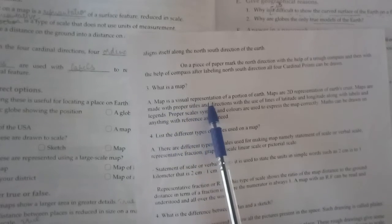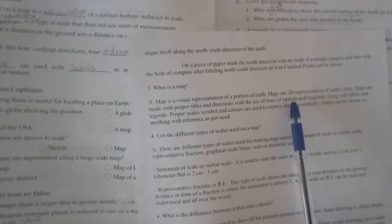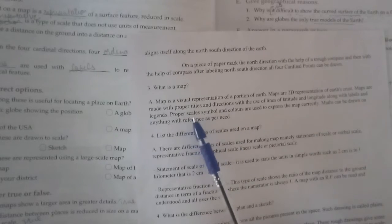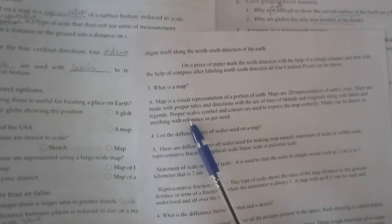What is a map? A map is a visual representation of a portion of earth. Maps are 2D representation of earth's crust. 3D is globes, which is like earth, and maps are always 2D, in the dimension of length and breadth. Maps are made with proper titles and direction. When we make a map, there is a proper title about what the map is related to and what is in the map, and directions.